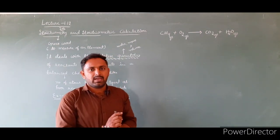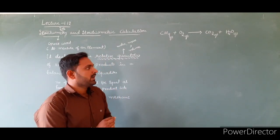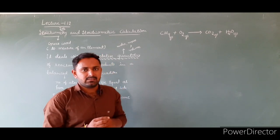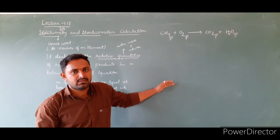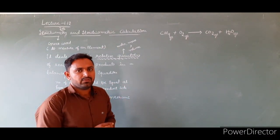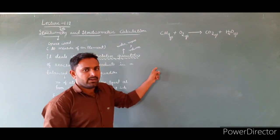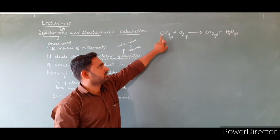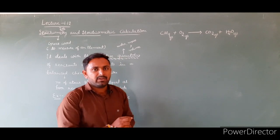When the reaction is not balanced, you have to balance it. To balance the reaction, follow this sequence: first balance carbon, then hydrogen, and finally oxygen. Carbon: one on each side — balanced. Hydrogen: reactant side has four, product side has two, so put a coefficient of 2 before water. Now hydrogen is balanced.